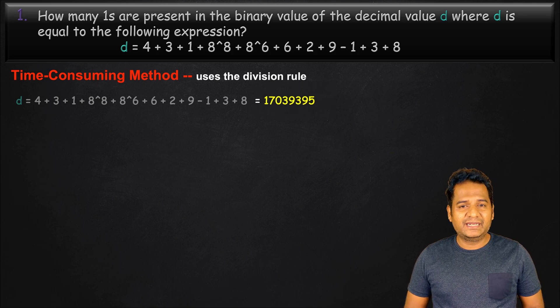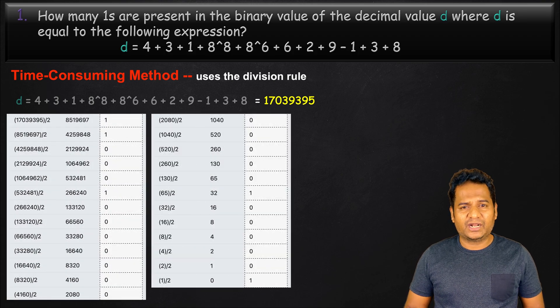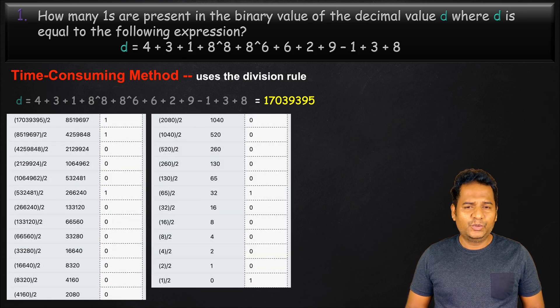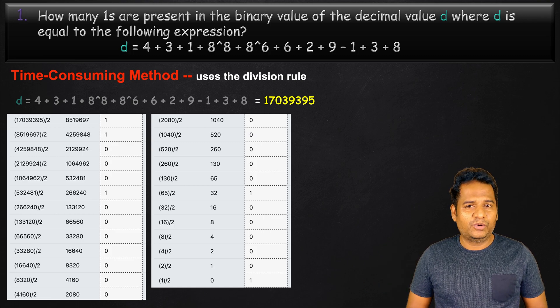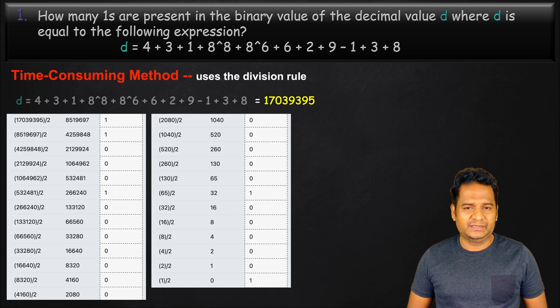We can then apply the division rule that we discussed in the previous video to convert this large number to binary as shown here. If you try this out, it will take quite some time and also be prone to errors.